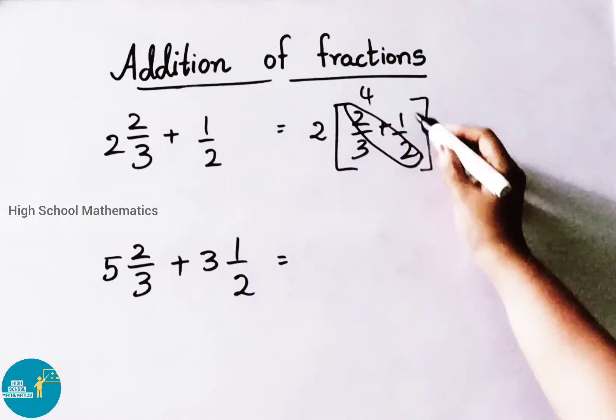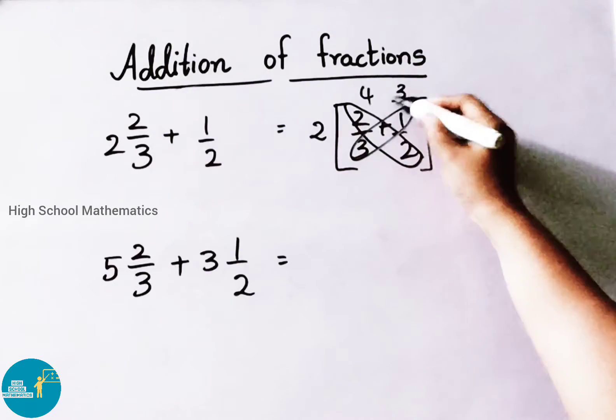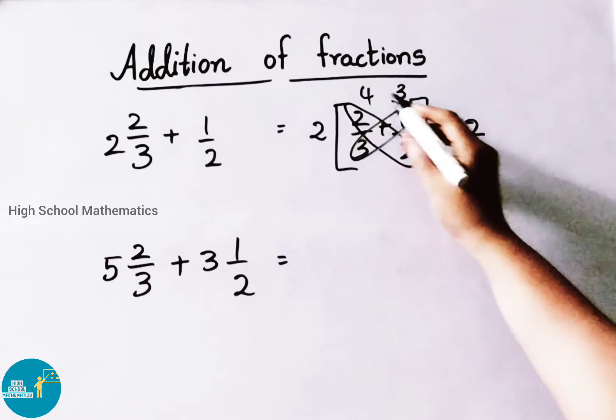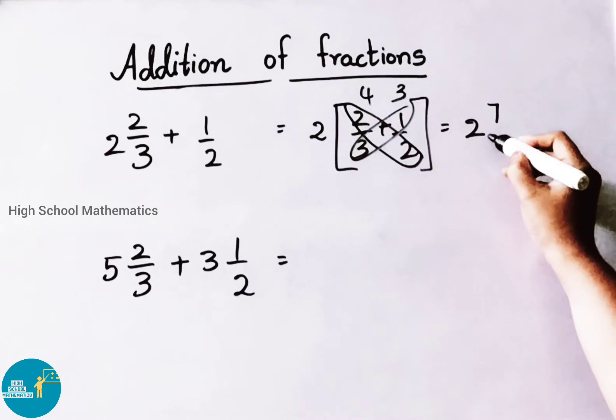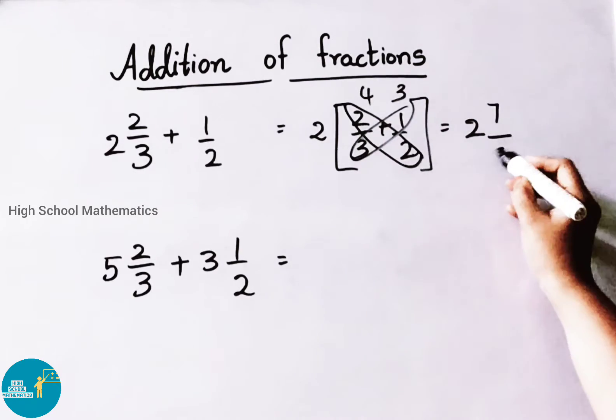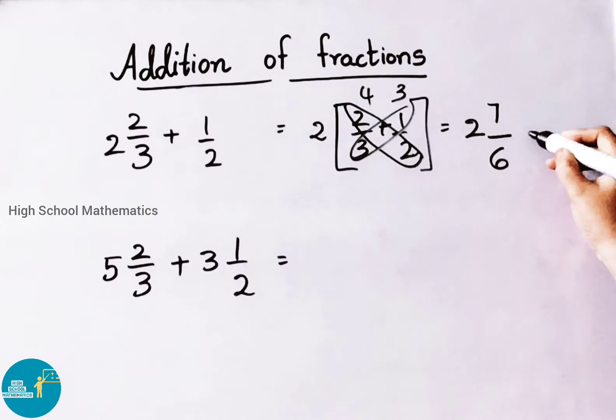2 times 2 is 4. 3 times 1 is 3. That equals to 2. 4 plus 3 is 7. By 3 times 2 is 6. So the answer is 2 and 7 by 6.